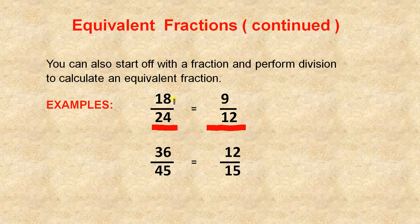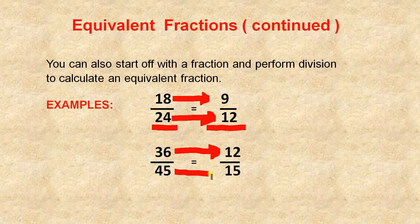Eighteen divided by two gives you nine. Twenty-four divided by two gives you twelve, and that's why they are equivalent. Here, thirty-six divided by three gives you twelve. Forty-five divided by three gives you fifteen.